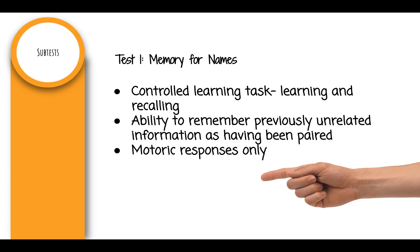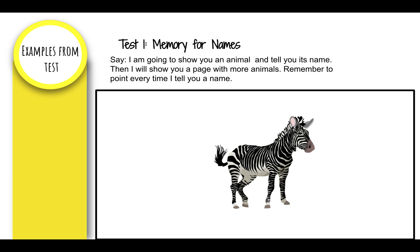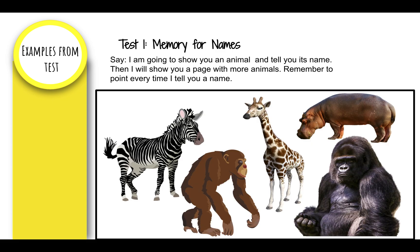Test 1: Memory for Names. This subtest involves controlled learning, task learning and recalling, and the ability to remember previously unrelated information as having been paired. Motoric responses only — the student will only point to respond. For example, you would say, 'I am going to show you an animal and tell you its name. Then I will show you a page with more animals. Remember to point every time I tell you a name. This is a zebra. Point to the zebra.' The student places their finger on the zebra. You then show them the next page and prompt the child to point to the zebra again, and the child points to only the zebra.